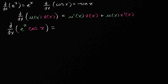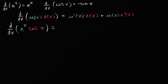The way you remember it is: you have these two things, and you're going to end up with two different terms. In each of them, you take the derivative of one but not the other, and then for the other term, you take the derivative of the other but not the first. So the derivative of u times v is u prime times v, plus u times v prime.